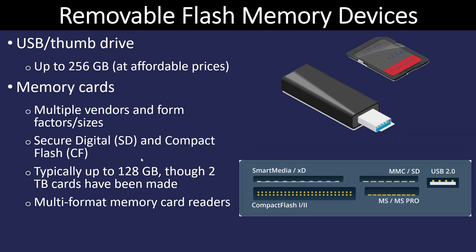Removable flash memory devices — USB thumb drives — can be purchased and are relatively inexpensive at the moment. They come in a lot of varieties and can be quite large, up to 256 gigabytes. There are also memory cards, which work similarly to a flash drive. They come in SD or compact flash formats. Here on the screen you can see an example of what an interface on a computer might look like — there are four different slots: one for compact flash, MS stands for memory sticks, an SD, and an XD card would all fit in that. So whatever memory card you're going to use, you need to make sure you have the correct reader in order to work with it.